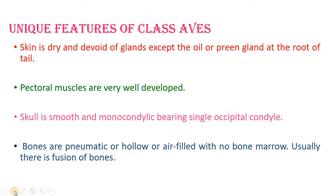The skin of birds is dry, devoid of glands except the oil or preen glands at the root of the tail. The skin is also elastic, which makes flying more flexible because of its loose elastic nature. The pectoral muscles are very well developed and are used for flight. These pectoral muscles are attached to the keel or carina, and are referred to as pectoralis major, pectoralis minor, and coracobrachialis — these are the flight muscles.